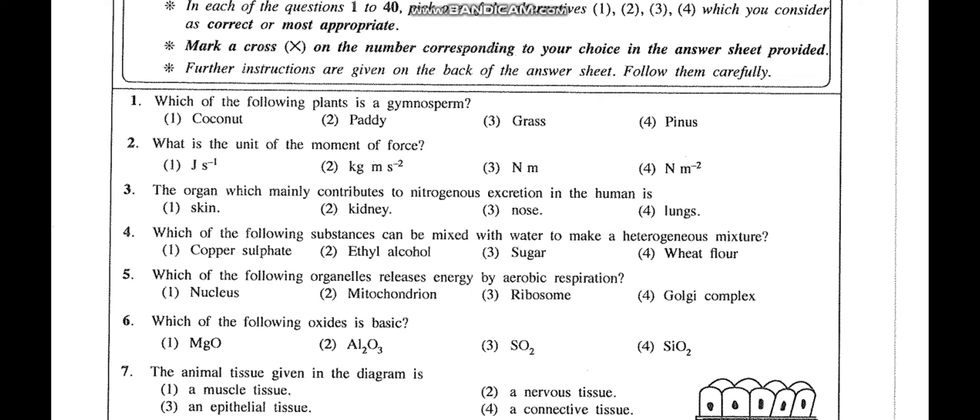Question 1: Which of the following plants is a gymnosperm? A gymnosperm is an unflowering seed plant where the seeds are not covered by a fruit. The two examples in the textbook are cycas and pinus, so our answer is pinus. Grass, paddy, and coconut are all monocot plants whose seeds are covered by a fruit.